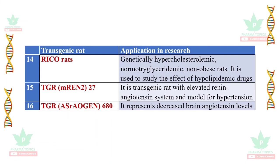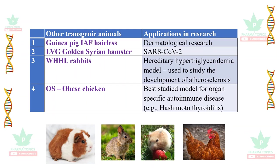The TGR(mRen2)27 rat is a transgenic rat with an elevated renin-angiotensin system and is a model for hypertension. The DGR-ASR/Aogen-680 transgenic rat represents decreased brain angiotensin levels. Other transgenic animals include the kidney pig IAF hairless model useful for dermatological research, the LBG golden Syrian hamster useful in SARS-CoV-2 infection research, WHHL rabbits that develop hereditary hypertriglyceridemia and are used to study atherosclerosis, and the obese chicken, the best-studied transgenic model for organ-specific autoimmune diseases such as Hashimoto's thyroiditis.